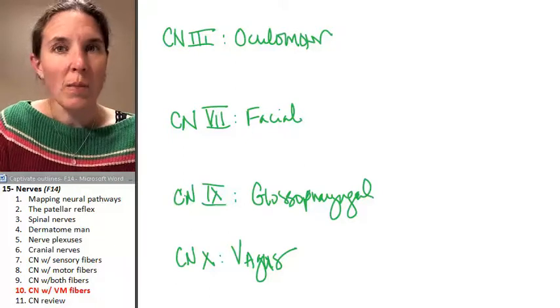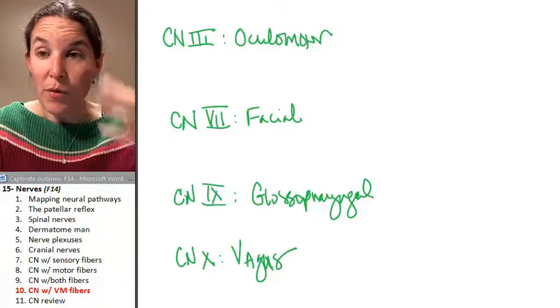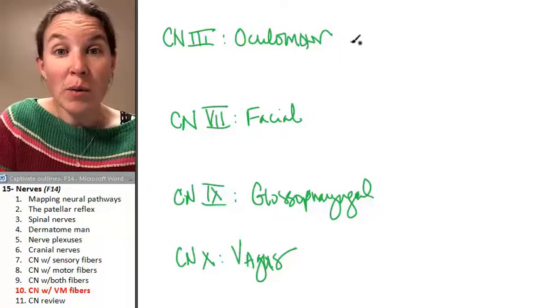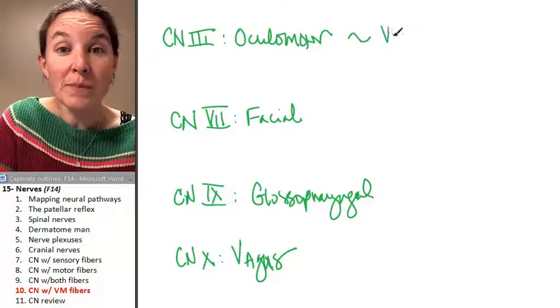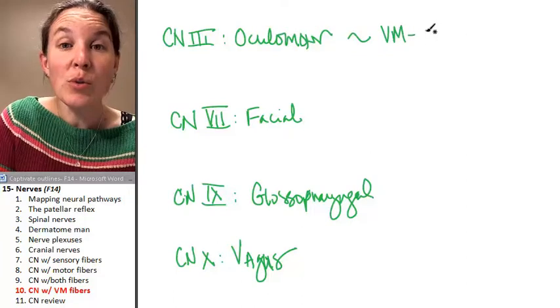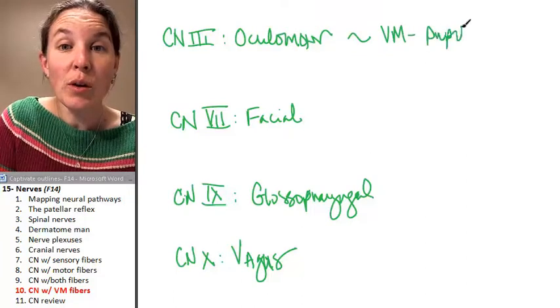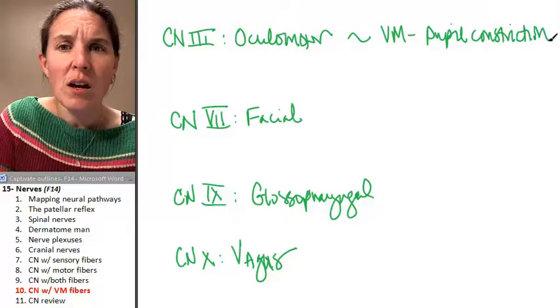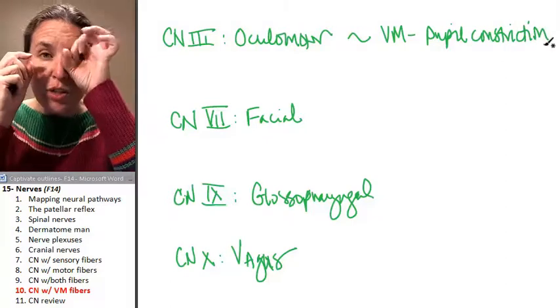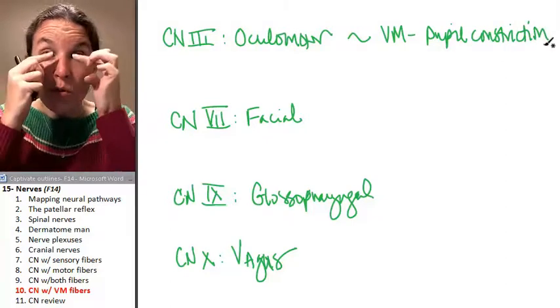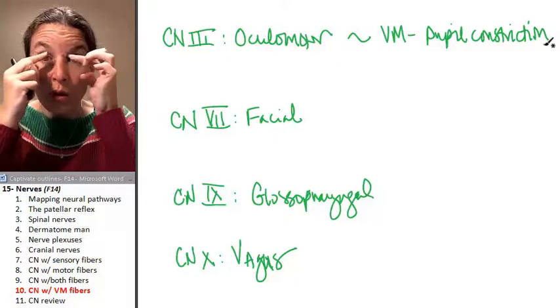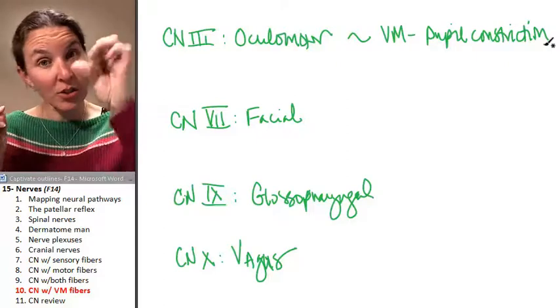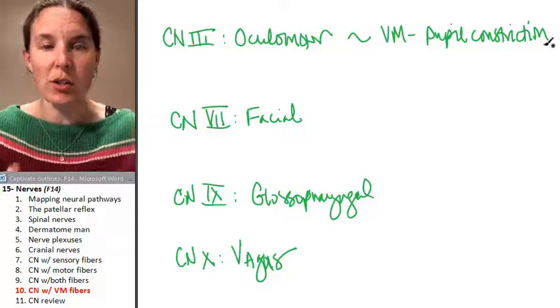Oculomotor. Remember, that guy was motor to four eye muscles. It also is visceral motor to pupil constriction. Now, pupil constriction. So there are smooth muscles surrounding your pupil that when they contract, they cause your eye to constrict, your pupil to constrict.